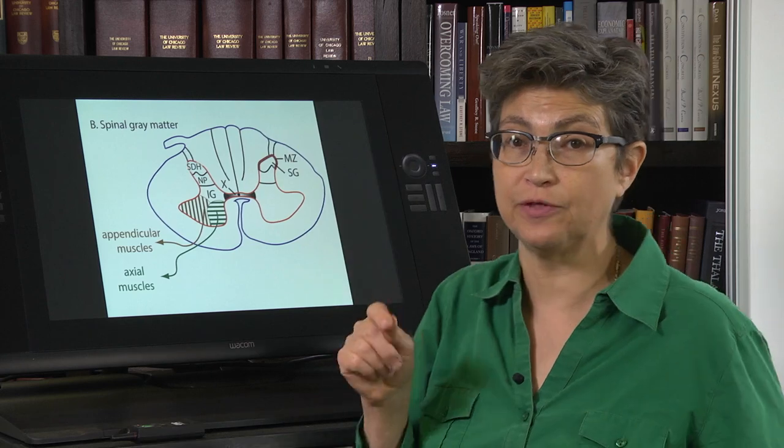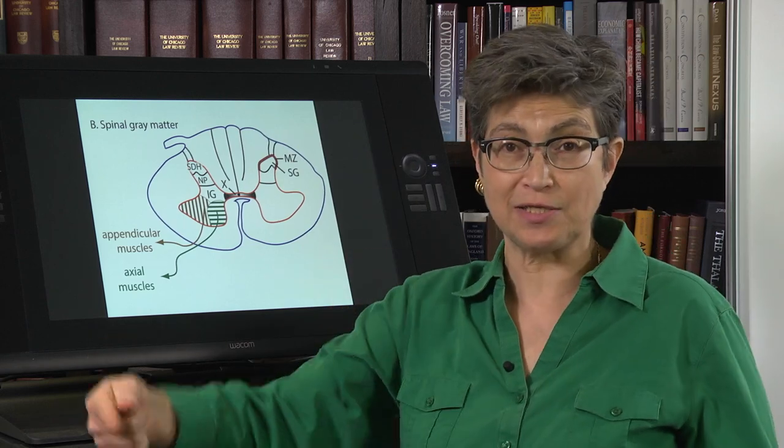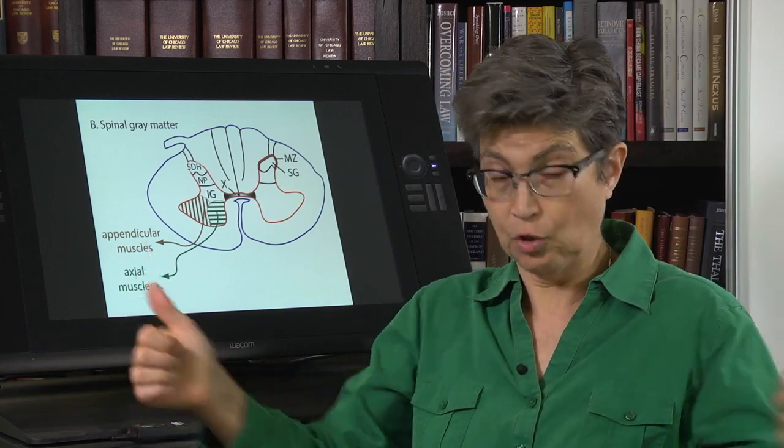So if you have a lateral extension to the ventral horn, you cannot be in thoracic cord. Okay, great.